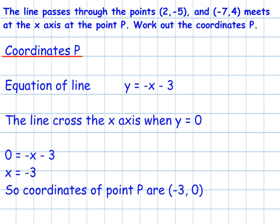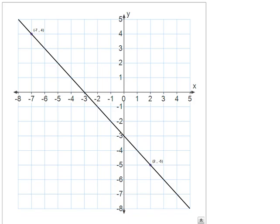And I can just show you that. So I've got (-7, 4) and (2, -5). You can see it's got a gradient of minus 1, and it does pass the x-axis when it comes back to minus 3.